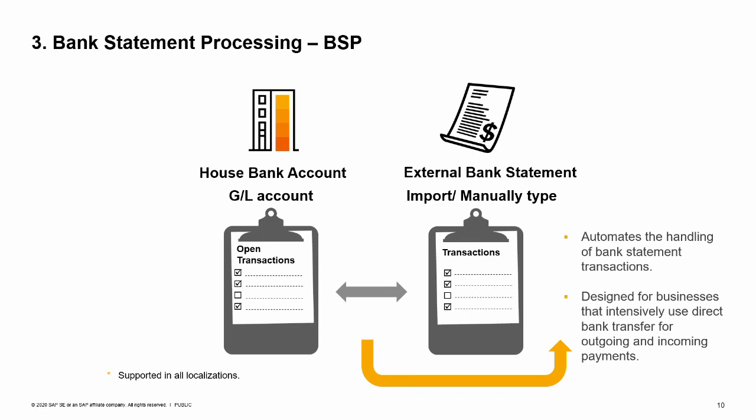The last option is Bank Statement Processing. This option automates the processing and reconciliation of transactions from a bank statement. It is designed for businesses that intensively use direct bank transfer for outgoing payments. Since most customers pay by direct bank transfer, the company accountant only becomes aware of an incoming payment after importing the bank file. The bank statement processing function lets you automatically generate incoming and outgoing payments and perform internal and external reconciliations. By entering bank statement details — either automatically or manually — you can create transactions that have not yet been posted. This process is supported in all localizations. The key to the efficiency of the BSP functionality is the setup; the automation of bank statement processing is directly related to the accuracy of the settings as relevant to the business.